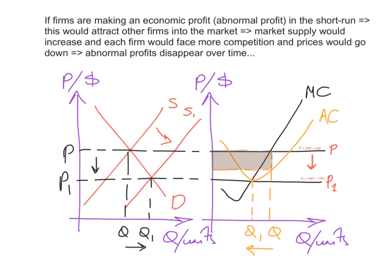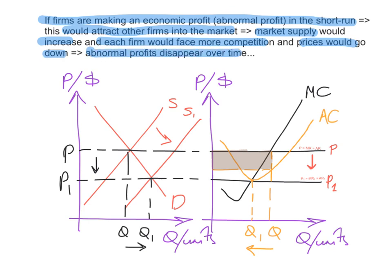The reason is that if firms in a perfectly competitive market are making abnormal profit in the short run, freedom of entry and exit attracts other firms into the market. Market supply increases, each firm faces more competition, and prices are driven down until those abnormal profits disappear over time. The supply curve shifts to the right, pushing price down and eventually eliminating the abnormal profits.